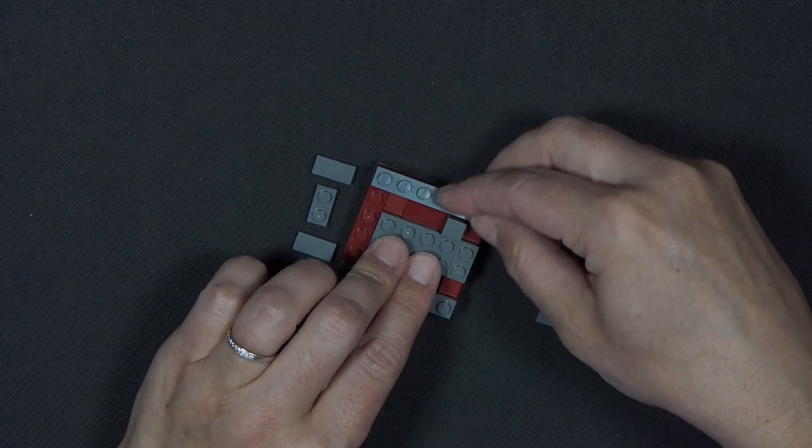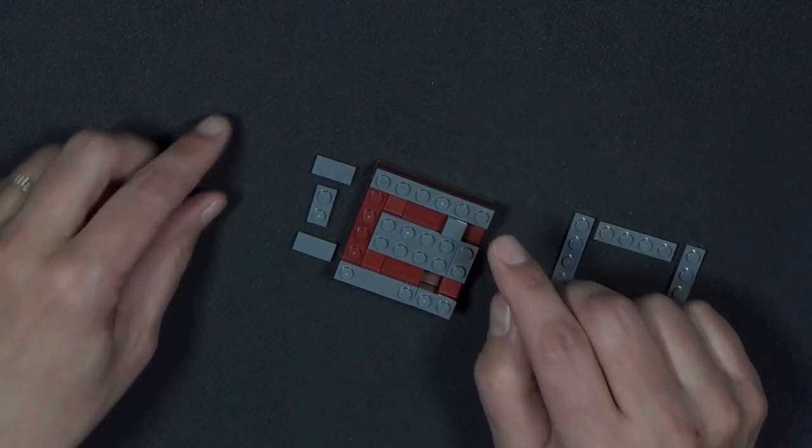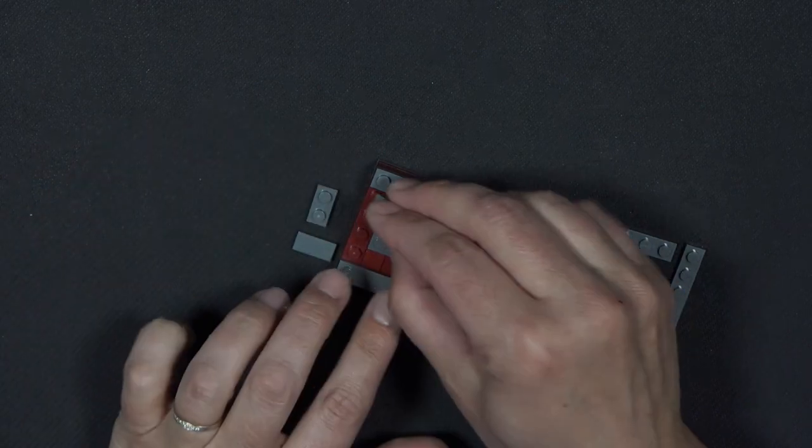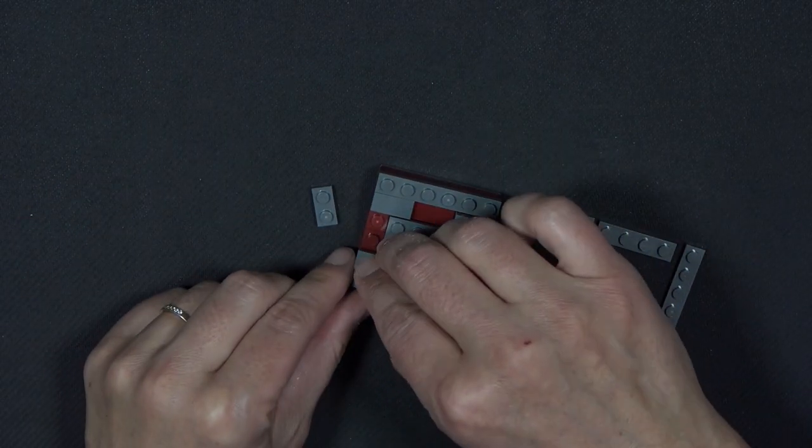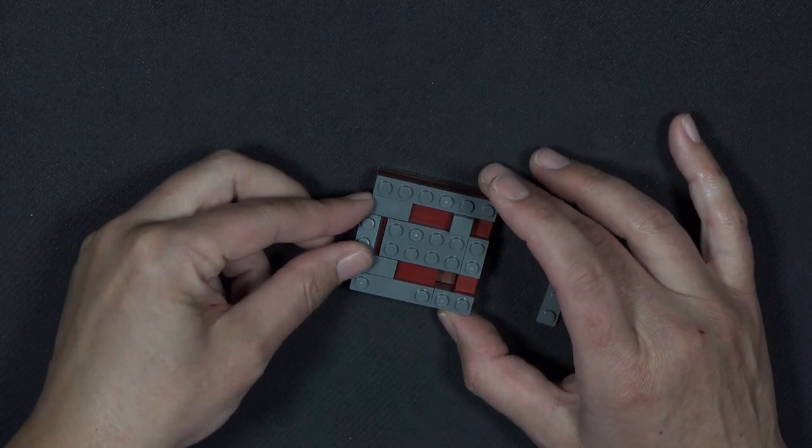A 1x6 plate. These are all in the dark bluish gray. A 1x2 tile here, and here, and a 1x2 plate there.